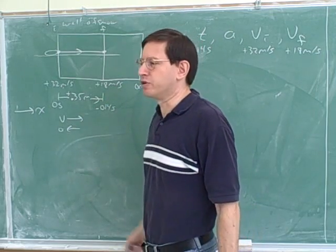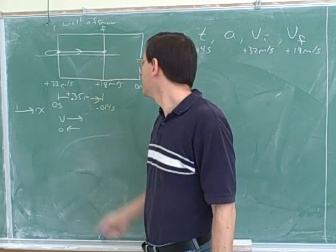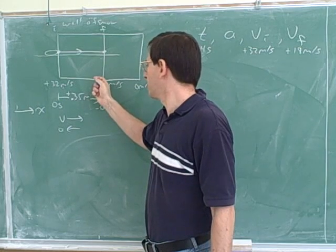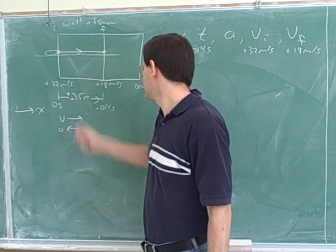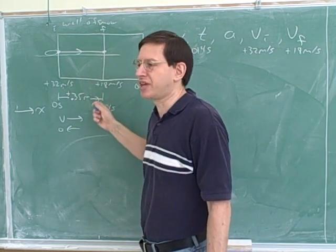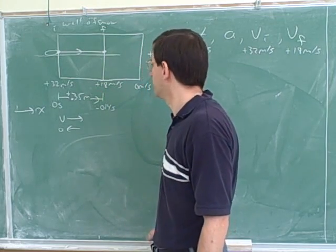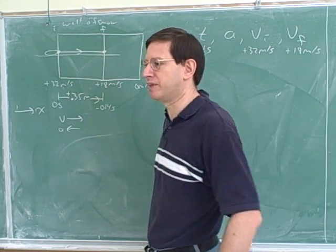Do I have to change any of these numbers? Well, these numbers are all really right. We're still entering at 32 meters per second. At this point, they still would be going at 0.18 meters per second. This is still 0.35 meters. So these numbers haven't changed. These are all still correct. But in another problem, they might change. So you have to be careful about that.